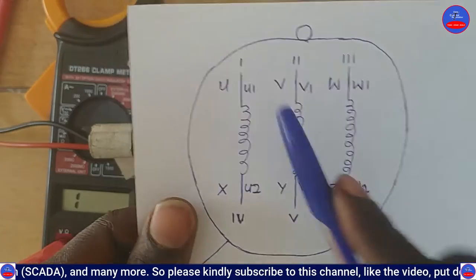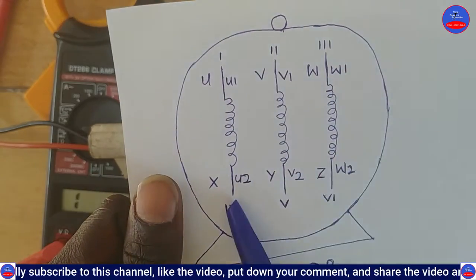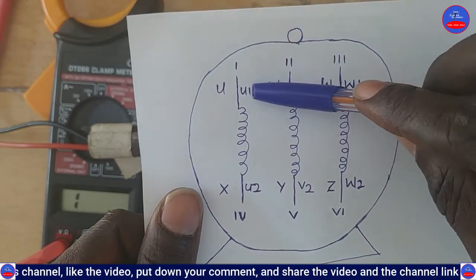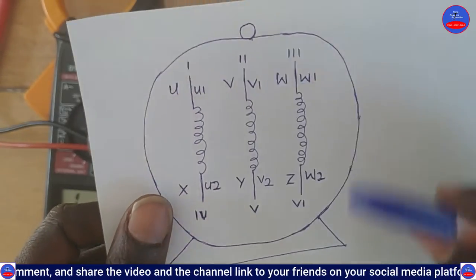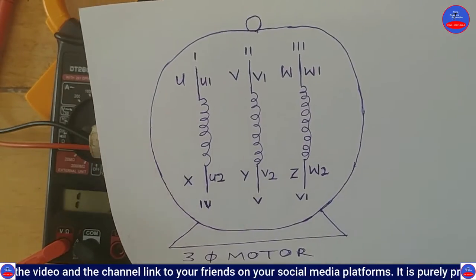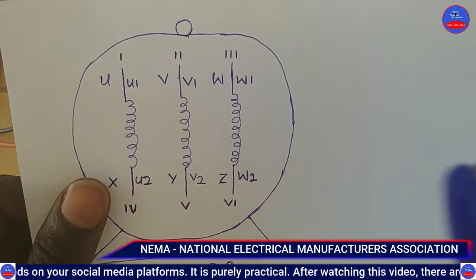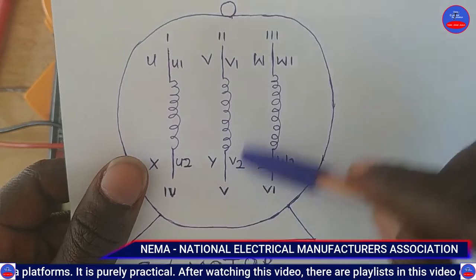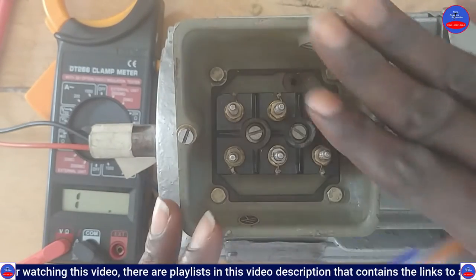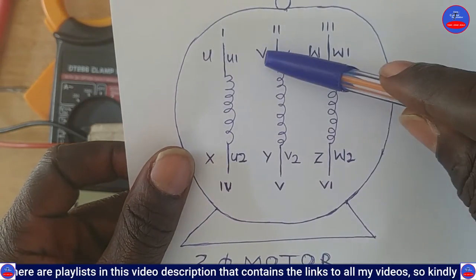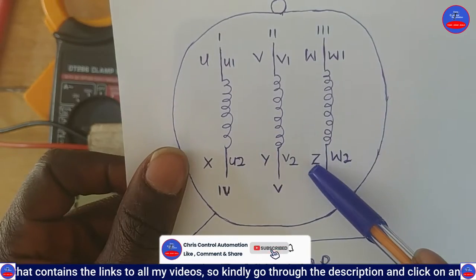Now let's look at the markings. When you open some motor terminal blocks you will see markings such as U1 and U2, V1 and V2, W1 and W2. These markings are commonly used by North American countries. NEMA — the National Electrical Manufacturers Association — specifies these markings: U1, U2, V1, V2, W1, W2. When you open some other motor terminal blocks you may also see U and X markings.